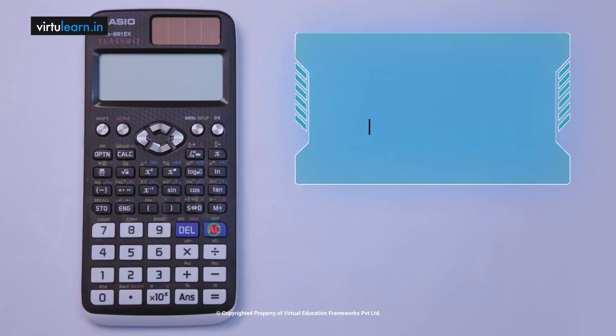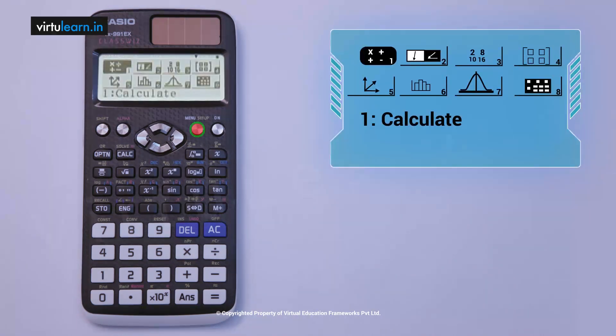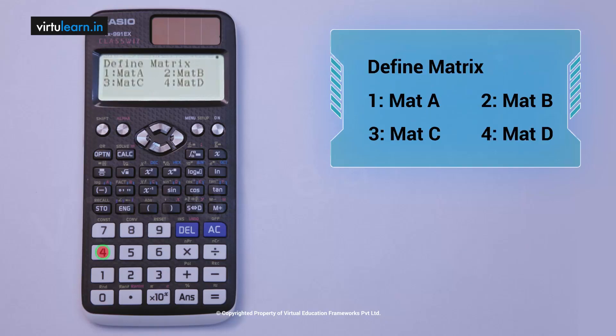If you want to enter matrices, choose the first button menu setup. I got some options: first one, second, and third. The fourth option has the matrix symbol. Then you choose the fourth option. Then I got some options. First of all, I will enter matrix A, the first option Mat A.